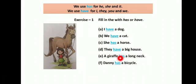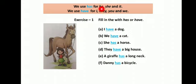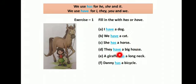Next — a giraffe dash a long neck. Giraffe animal है, so it use होगा। It के साथ has use होगा। A giraffe has a long neck. Next — Danny dash a bicycle. Danny boy का नाम है, so he use होगा। He के साथ has use होगा। Danny has a bicycle. Answers: I have a dog, we have a cat, she has a horse, they have a big house, a giraffe has a long neck, Danny has a bicycle.